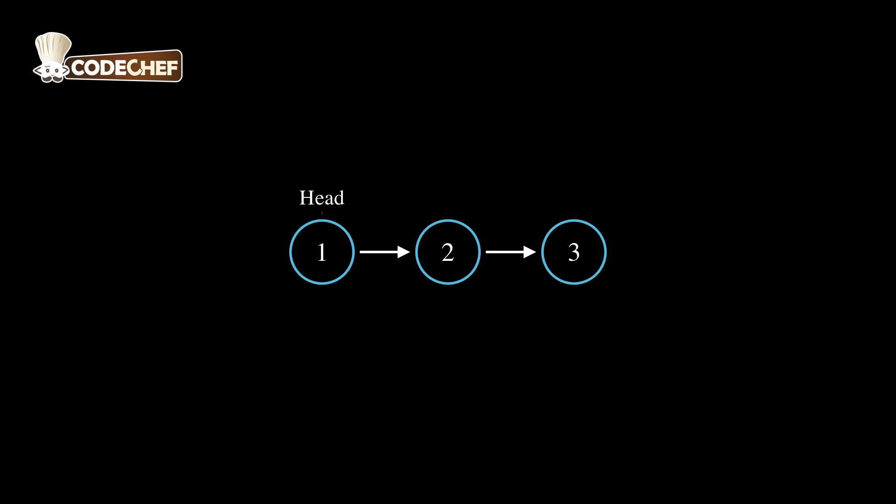Here's our linked list. It has three nodes with values 1, 2, and 3. The head pointer points to the first node, which contains the value 1.